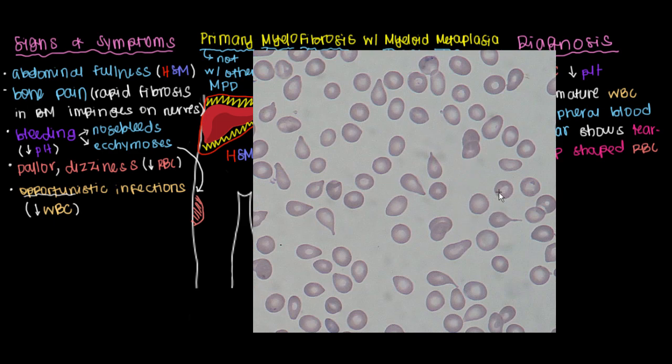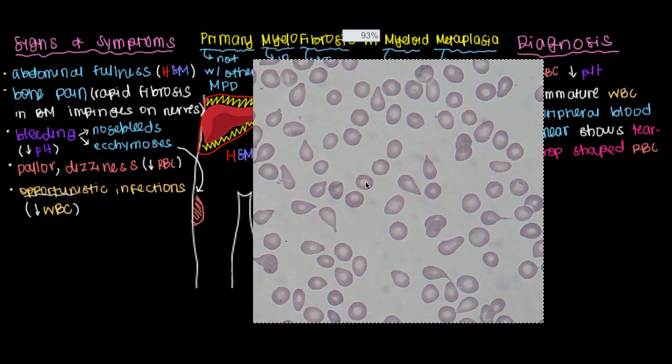While we might have some relatively normal-looking red blood cells, you've got these teardrop-shaped red blood cells that indicate that these cells are passing through a fibrotic bone marrow, which causes them to shear and have this unusual shape.